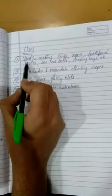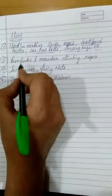Uses of nylon. It is used in making socks, ropes, toothbrush bristles, car seat belts, sleeping bags, etc. It is very strong. As we have learned, it is stronger than a steel wire.